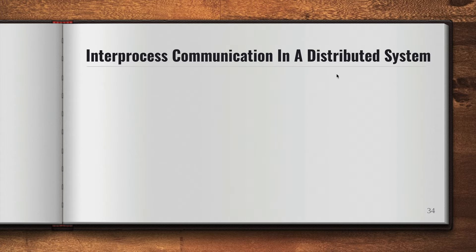So let's talk about inter-process communication in a distributed system. What is a distributed system? A distributed system is a collection of computers or nodes that are connected to each other through a network, and we will discuss the distributed system in detail later on. For now, let's focus on inter-process communication in a distributed system environment.